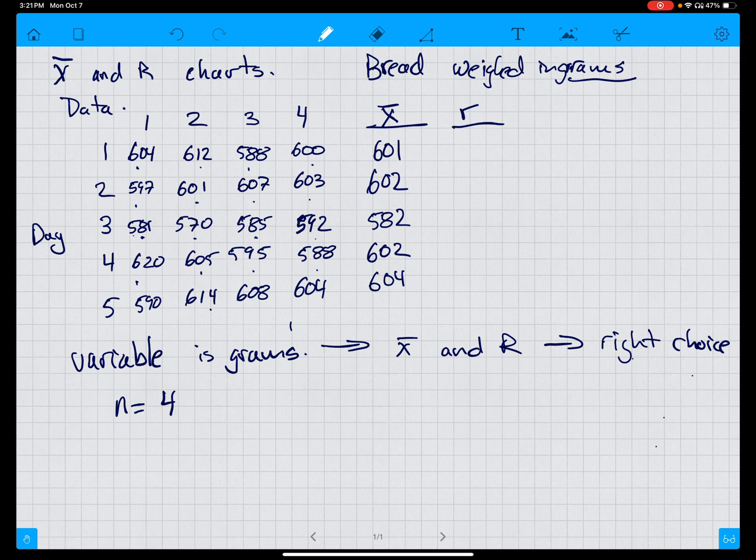The range is simply the difference between the biggest one, 612, and the smallest one, 588, which is 24. Biggest one is 607, smallest 597, that's 10. 592 and 570 is 22. 620 and 588 is 32. 590 and 614, the difference is 24.